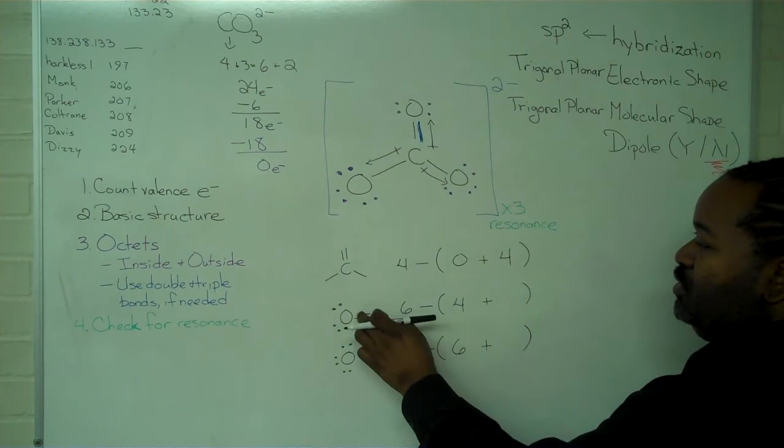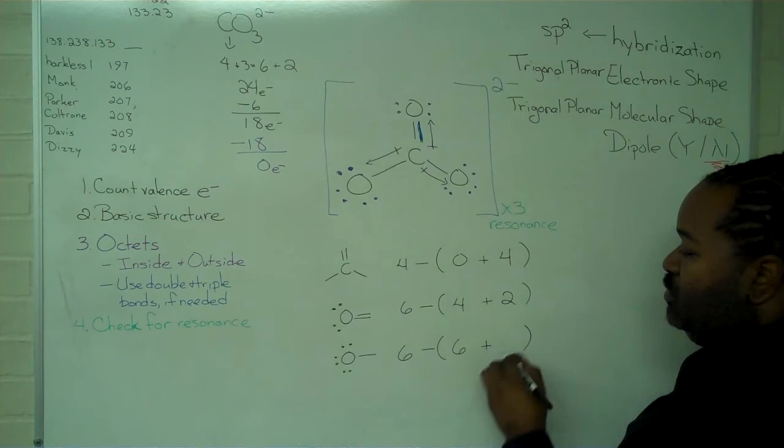For this oxygen, we have four unshared, and here we have six unshared. We have four in bonds, half of which is two. And we have two in bonds, half of which is one.